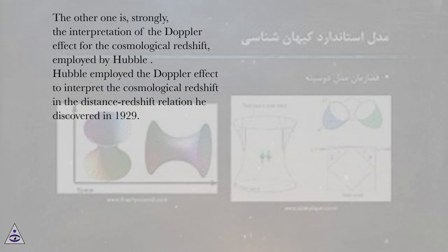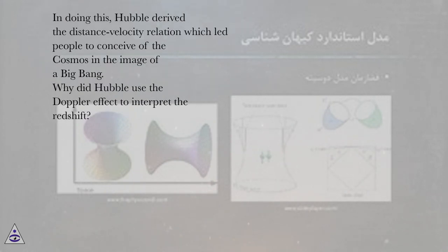Hubble employed the Doppler effect to interpret the cosmological redshift in the distance-redshift relation he discovered in 1929. In doing this, Hubble derived the distance-velocity relation which led people to conceive of the cosmos in the image of a Big Bang.